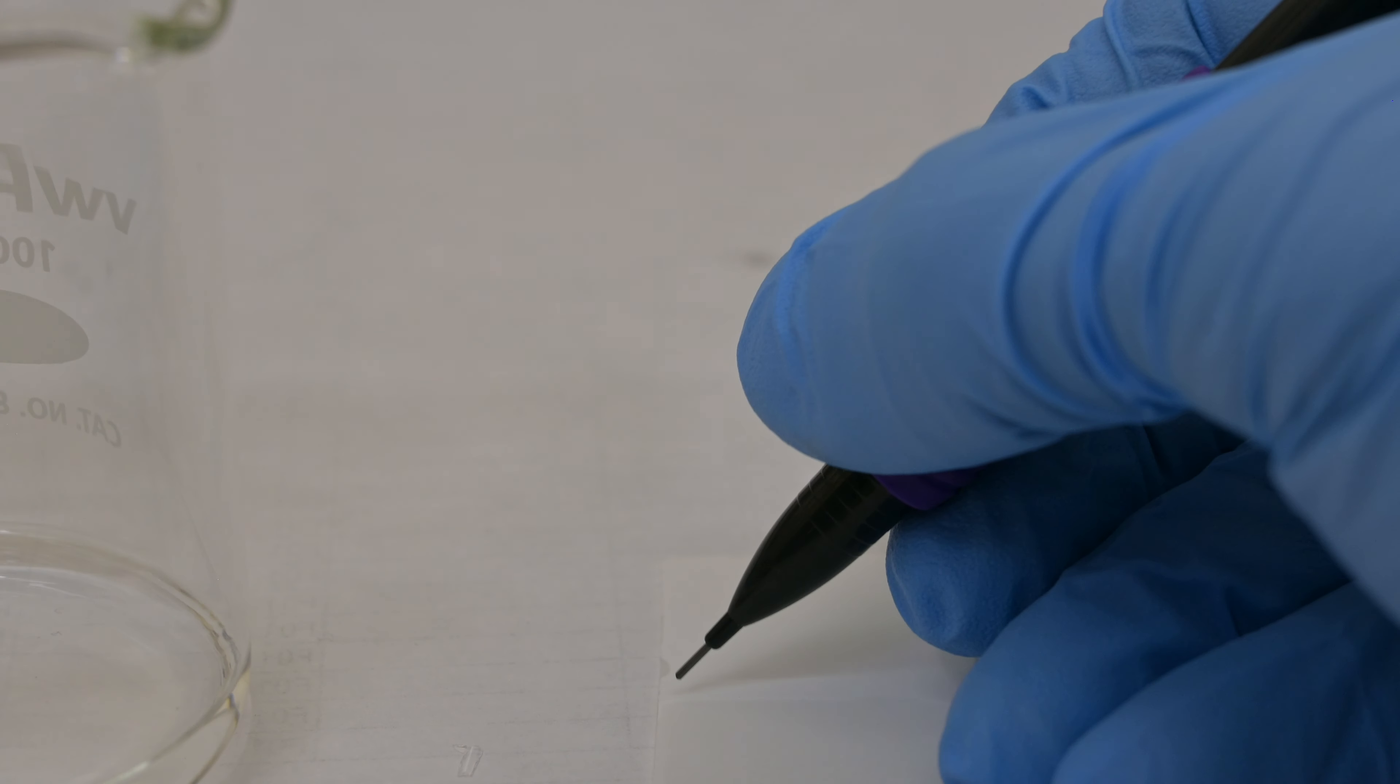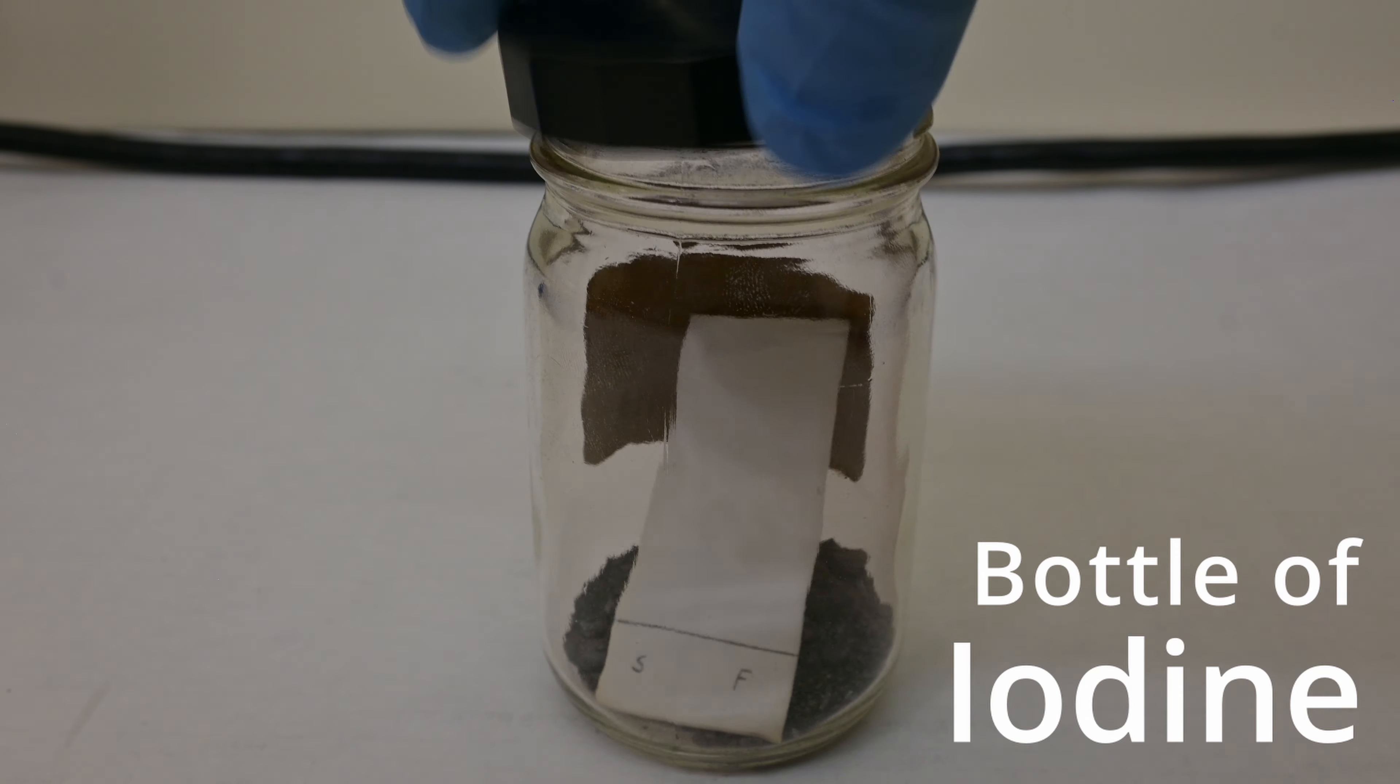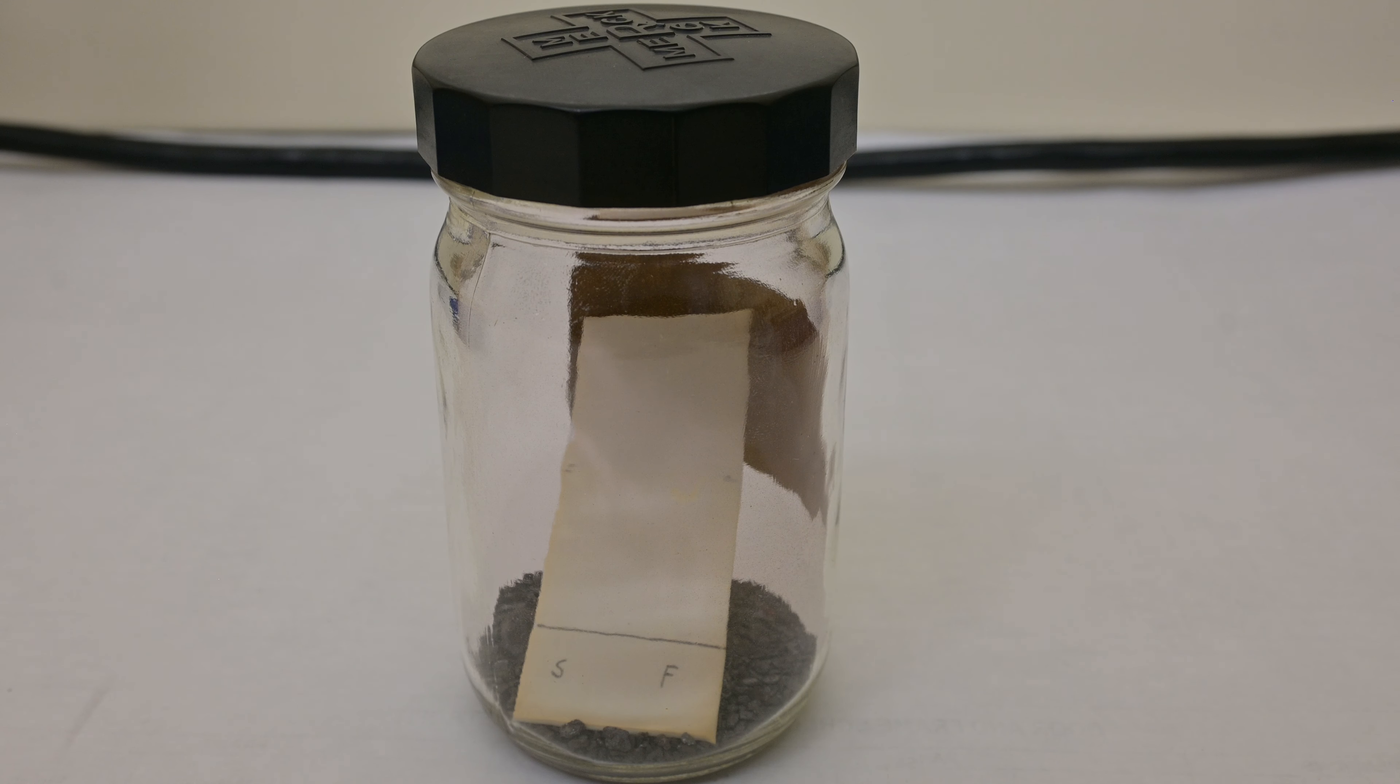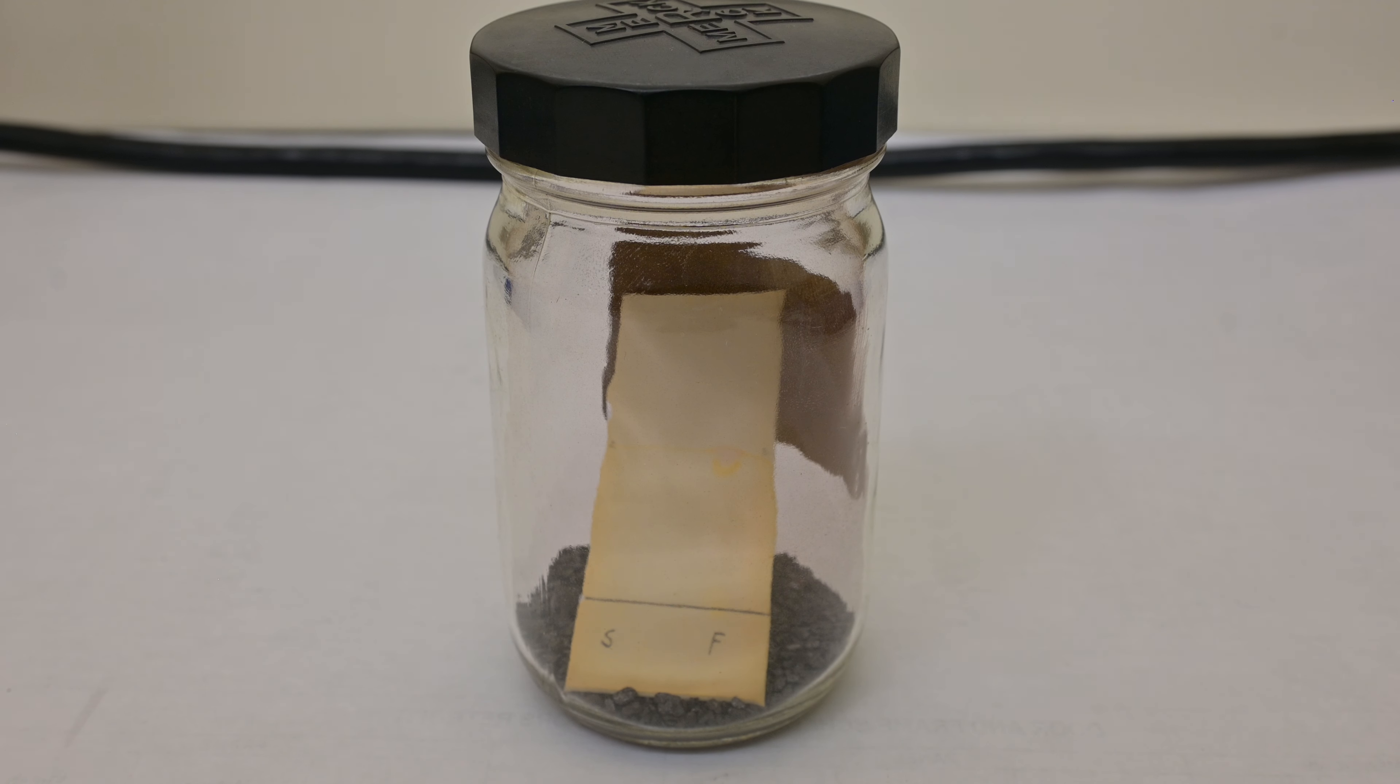After the solvent front has moved an adequate distance, we remove the plate and visualize the spots under UV light and or by staining. We compare the positions of the spots from the reaction mixture to the spot of pure M-toluic acid. If the reaction is complete, the spots corresponding to M-toluic acid should be absent or significantly reduced in intensity in the reaction mixture sample, indicating that M-toluic acid has converted to M-toluoyl chloride. The presence of new spots at different RF values would correspond to the product of M-toluoyl chloride. This process ensures that all M-toluic acid has been used up, confirming completion of the reaction.